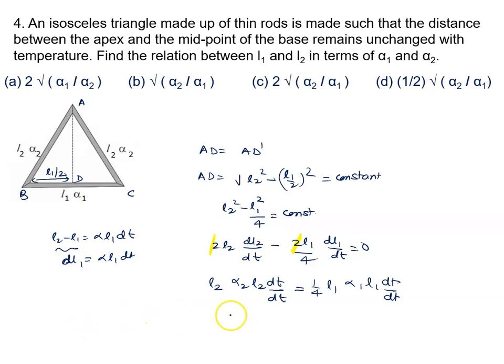So finally, we will write L2 alpha 2 into L2 equals, or we can say alpha 2 L2 square equals 1 by 4 alpha 1 L1 square. Now we have to calculate the relation between L1 and L2.